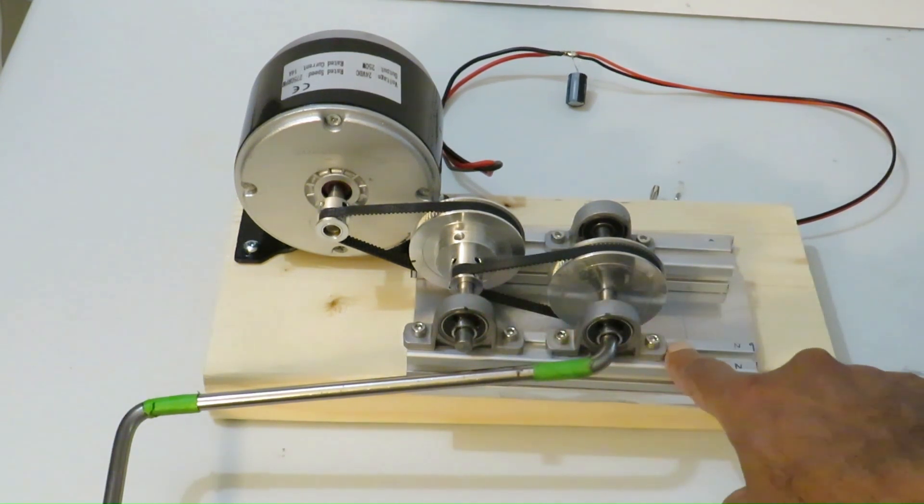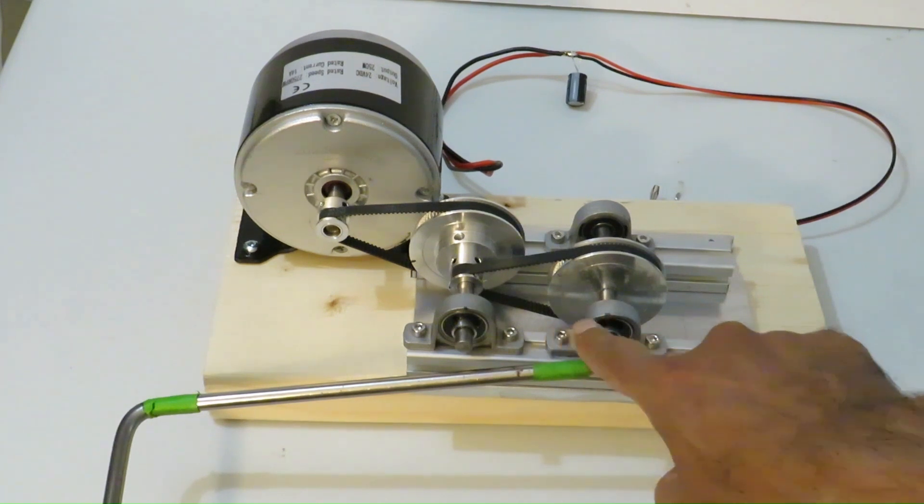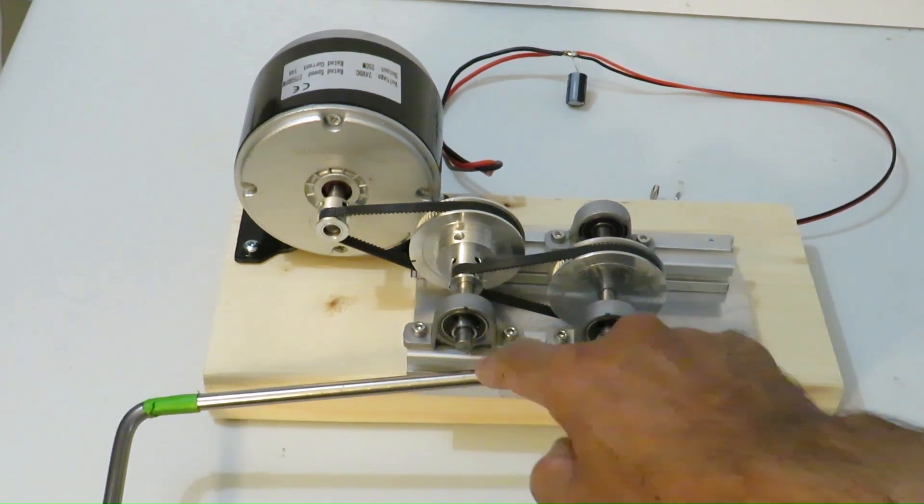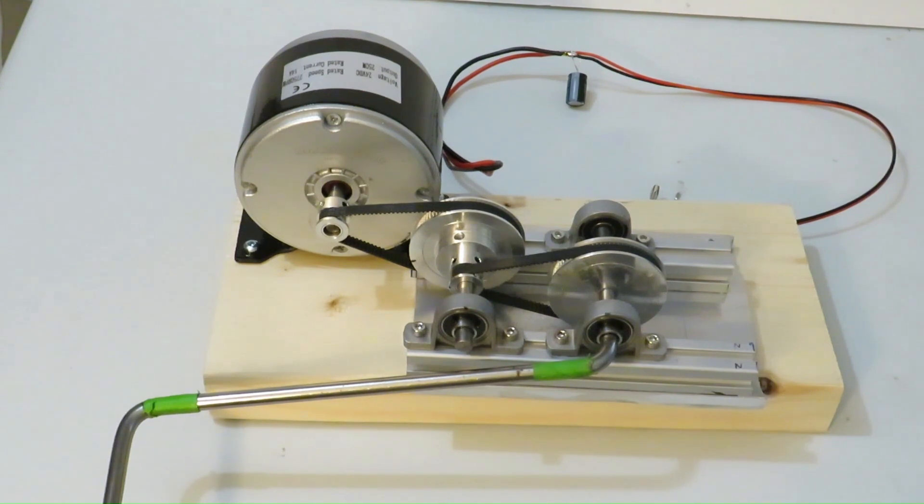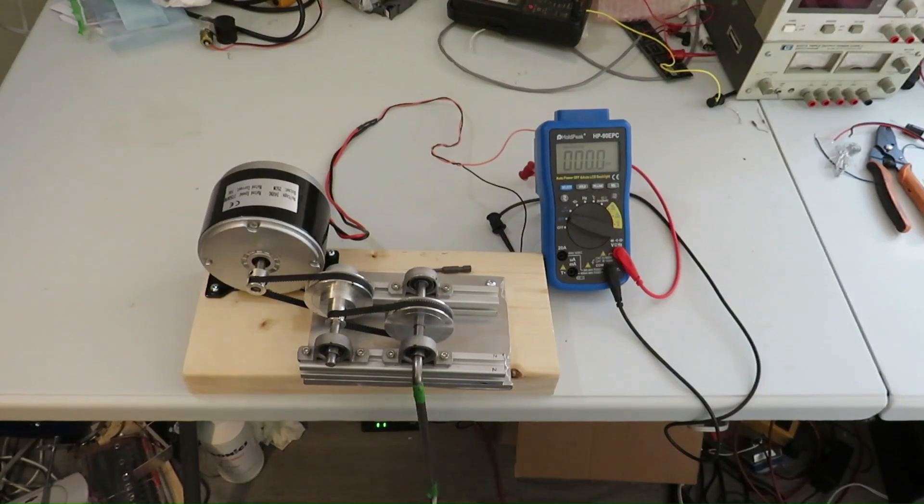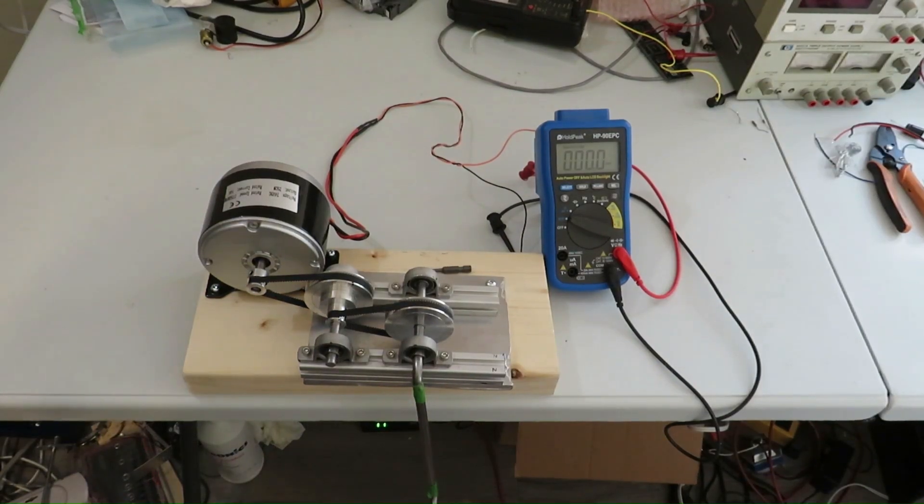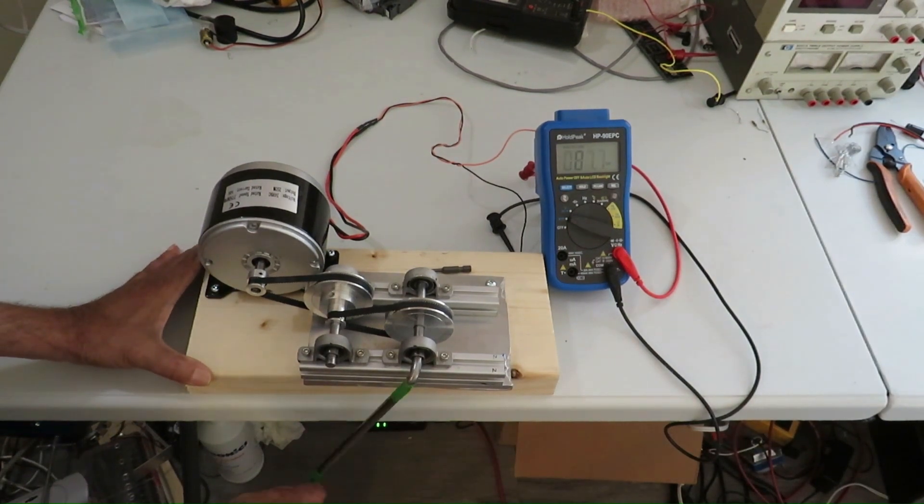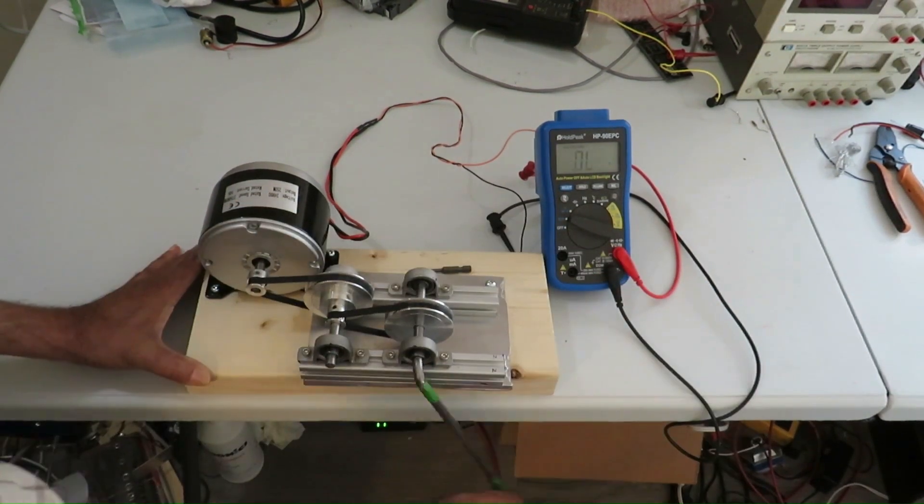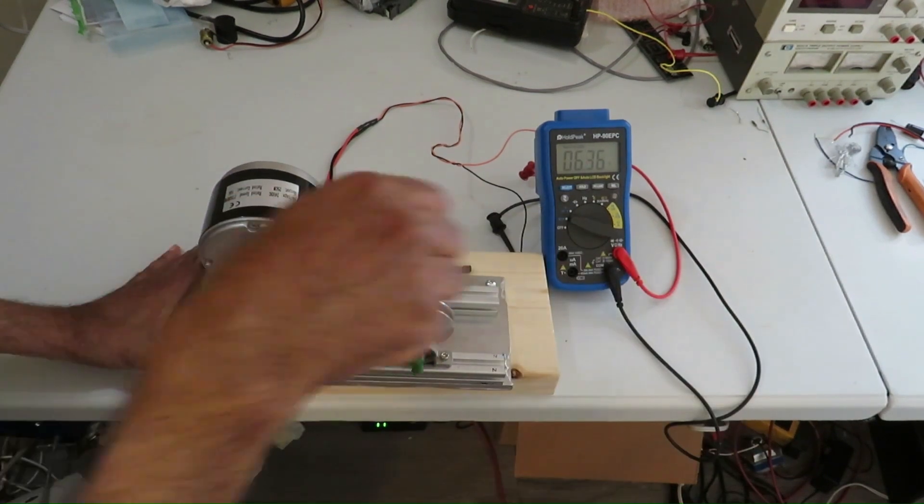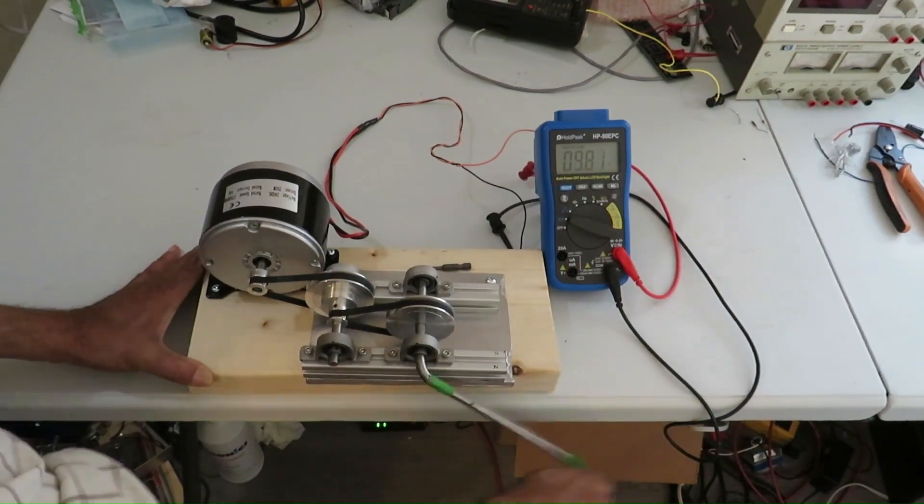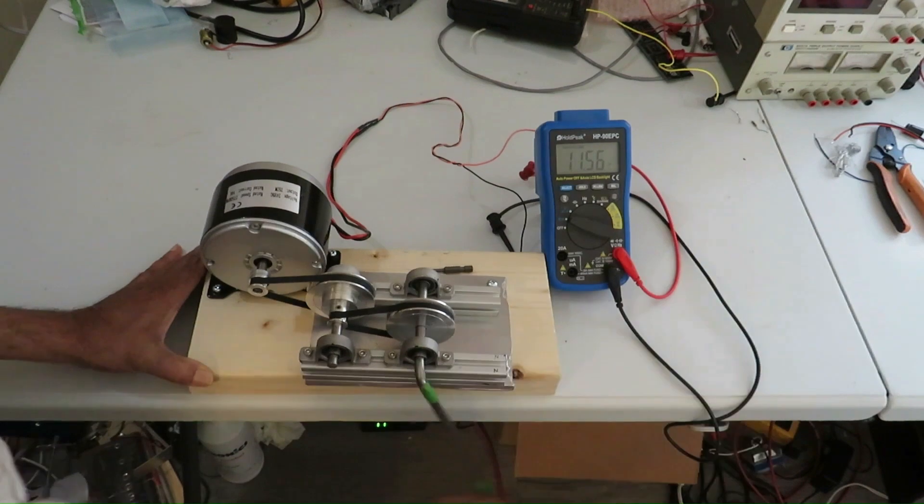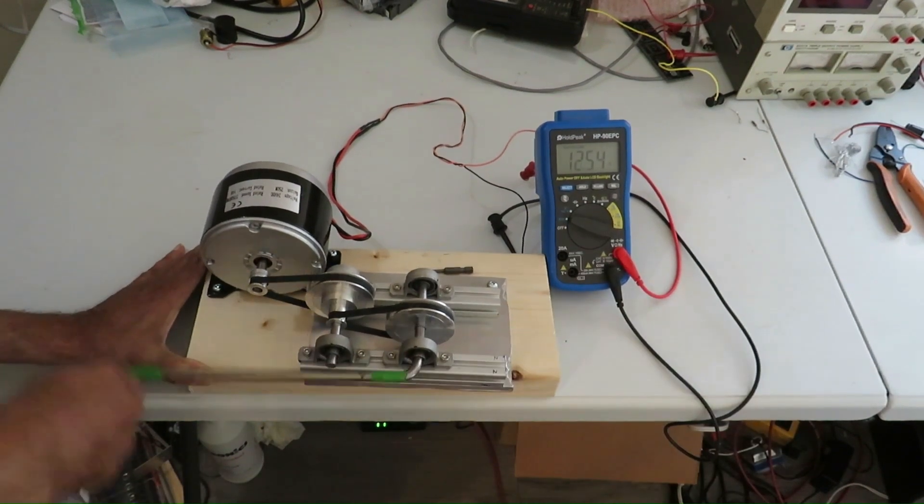And these two pillow blocks, the distance can be adjusted with these two screws. Now I am connecting a voltmeter and measuring the voltage. You can see as the speed goes up, the voltage also goes up.